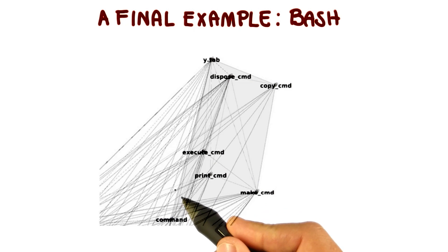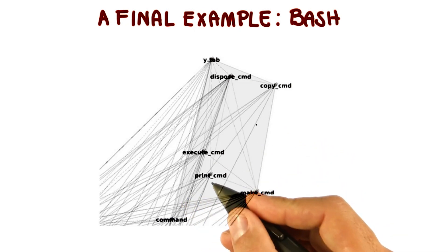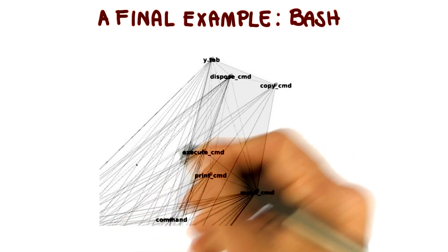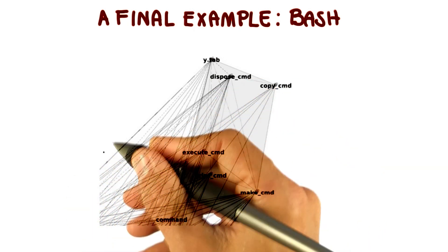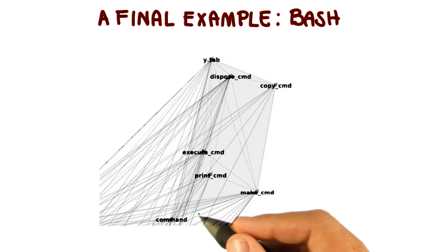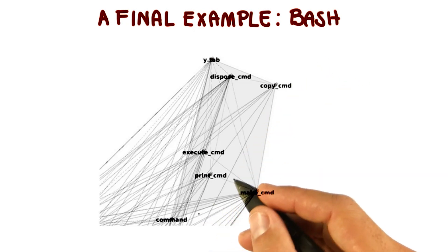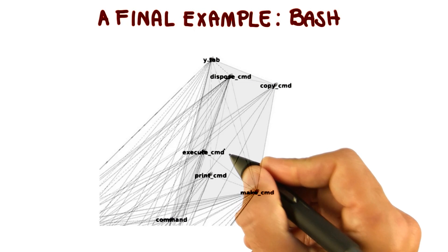The second thing that we can note is the high coupling. The component has tons of connections with other components. There are these edges leaving the component and going towards other parts of the system. So basically, this component has low cohesion and high coupling, which is exactly the opposite of how a good design should be.